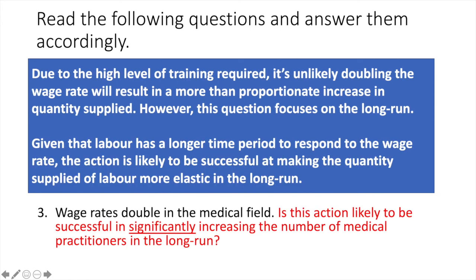Number 3. Due to the high level of training required, it is unlikely doubling the wage rate will result in a more than proportionate increase in quantity supplied in the short run. However, this question focuses on the long run. Given that labour has a longer time period to respond to the change in the wage rate, the action is likely to be successful at making the quantity supplied of labour more elastic in the long run.